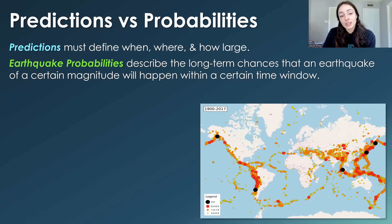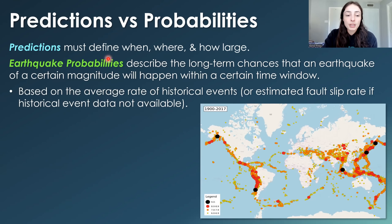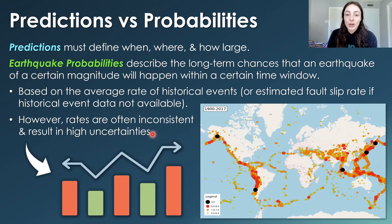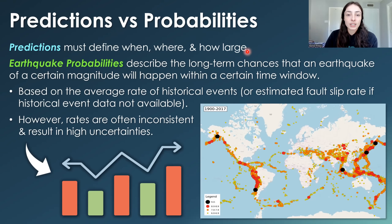Earthquake probabilities describe long-term chances that an earthquake of a certain magnitude will occur within a certain time window — like the hazard map I showed earlier. But these are not predictions. These probabilities are based on the average rate of historical events or estimated fault slip rates if historical data is unavailable. However, because the rates of slip along a fault plane can change drastically between slip events, these rates are often incredibly inconsistent and result in very high uncertainties. So probabilities don't even get us close to the when, where, and how big type of prediction.